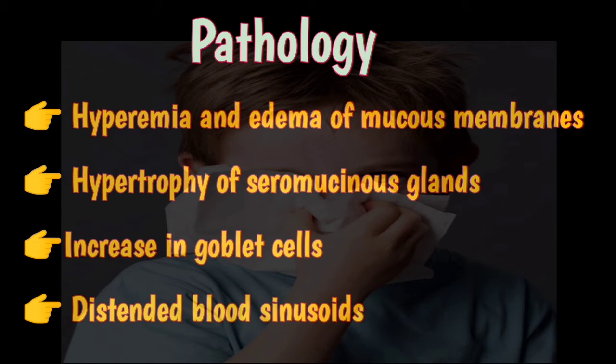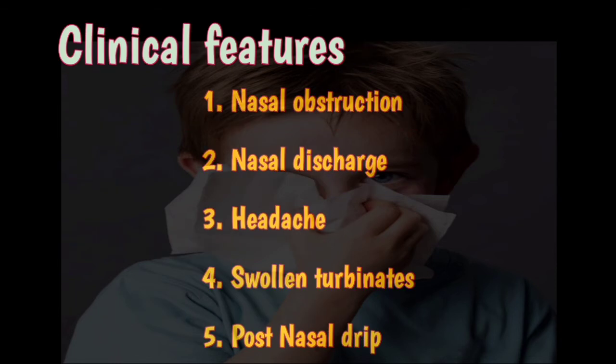The main pathology behind chronic simple rhinitis is hyperemia and edema of mucous membranes, hypertrophy of seromucous glands, increase in the number of goblet cells, and distended blood sinusoids. All these conditions lead to increased production of nasal secretions.